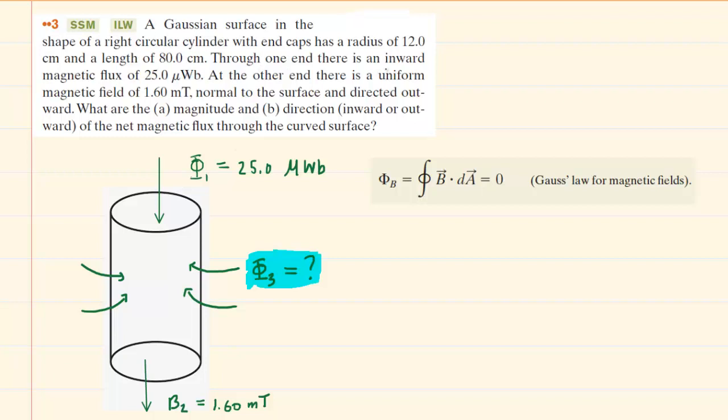For example, we knew that there was an inward magnetic flux of this magnitude right here. So at the top of our cylinder, we have drawn a magnetic field line to represent that flux, and it's entering the cylindrical surface.